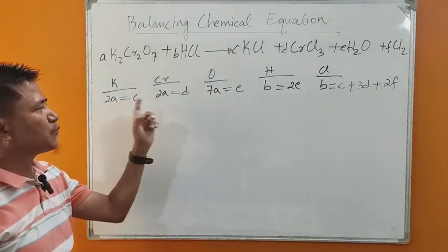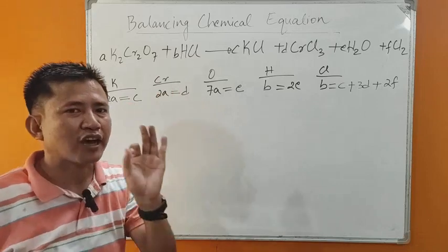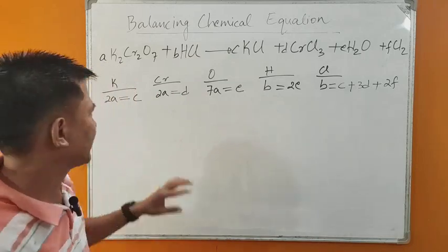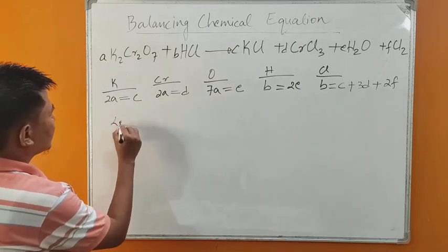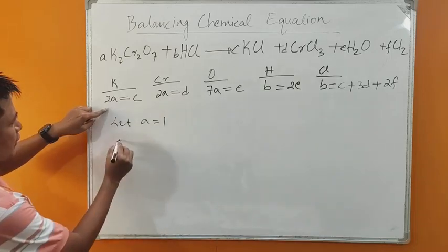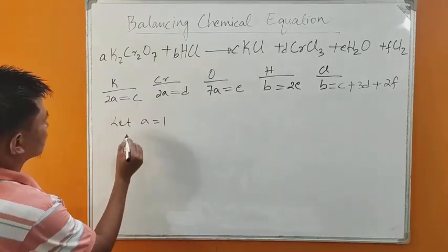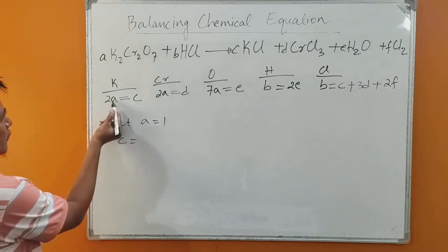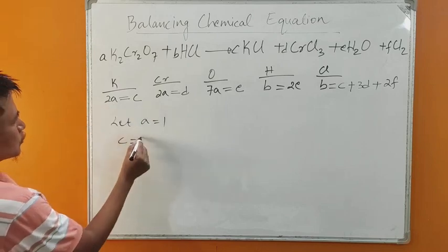Among A, B, C, D, E, F, we should choose the alphabet which occurs the most and let that alphabet equal 1. Here, we can see A appears three times. So let A equal 1. Now, C equals 2A. A means 1, so 2 into 1 is 2. C means 2. D means 2A, so 2 into 1 is 2. D means 2.